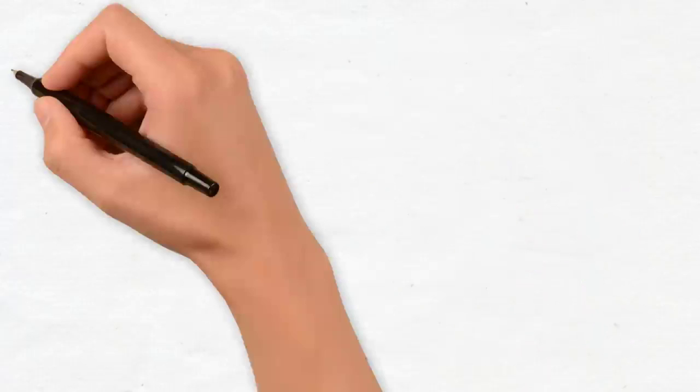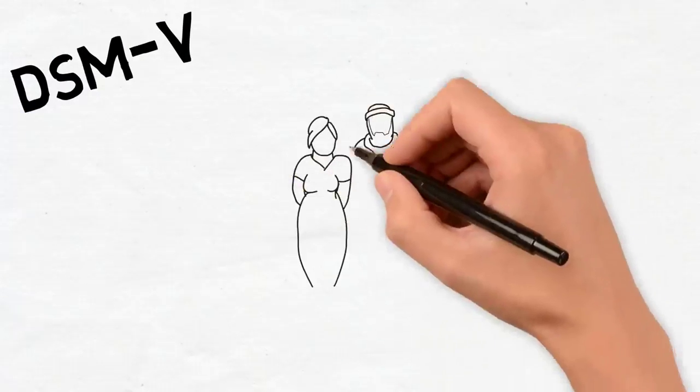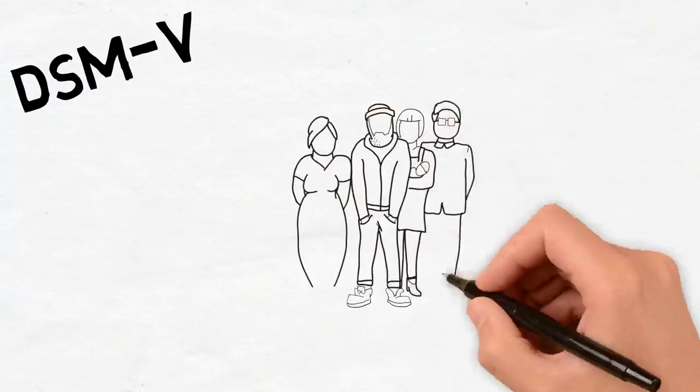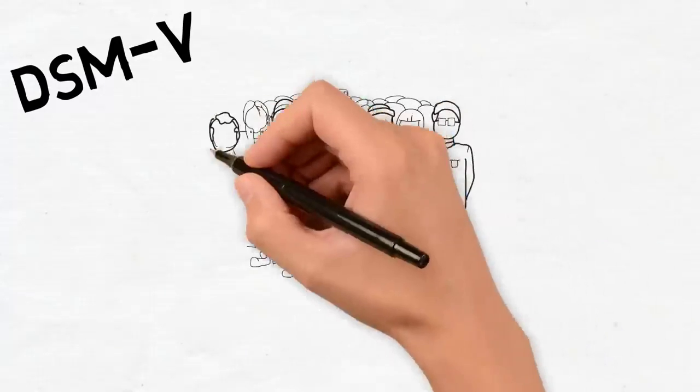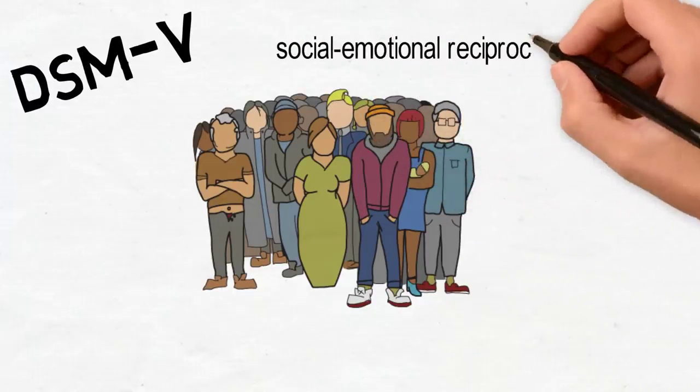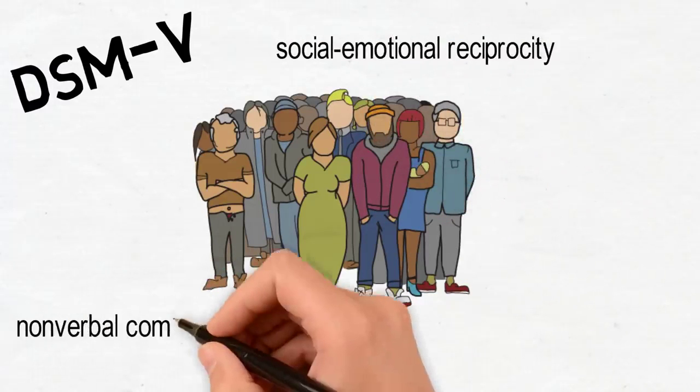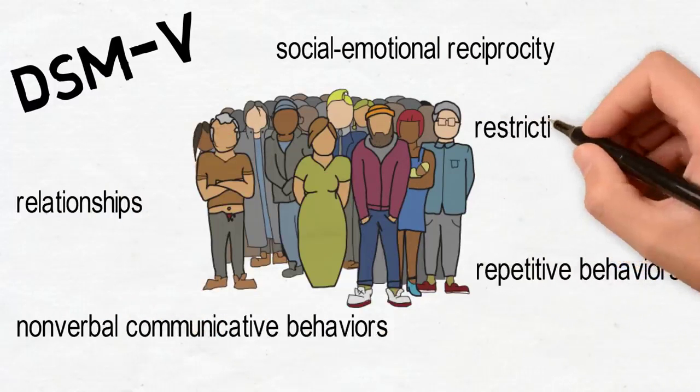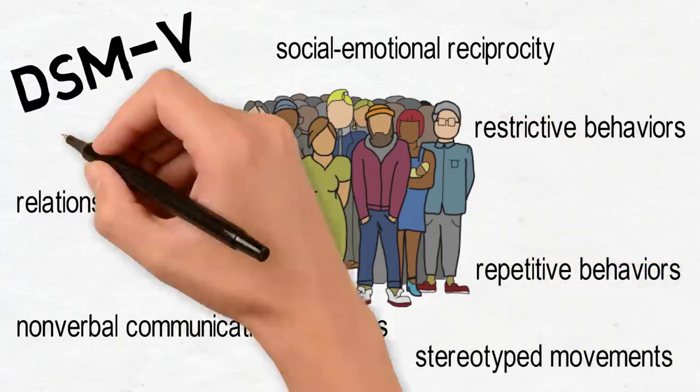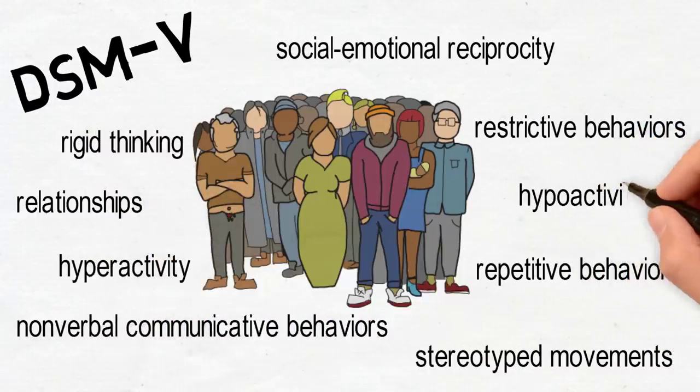The Diagnostic and Statistical Manual, or the DSM-5, is very specific as it mentions children with ASD show persistent deficits in social communication and interactions across multiple contexts. It describes the multiple contexts as having ranges of social-emotional reciprocity, non-verbal communicative behaviors, maintaining and understanding relationships, repetitive and restrictive behaviors, stereotyped movements, rigid thinking, and hyperactivity or hypoactivity to sensory input. These symptoms must be present during the child's early development period.